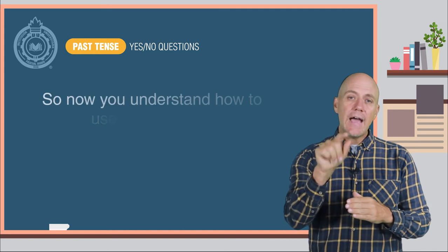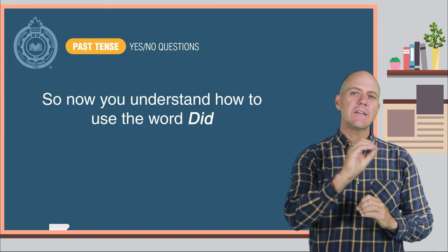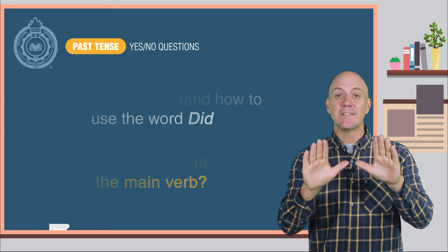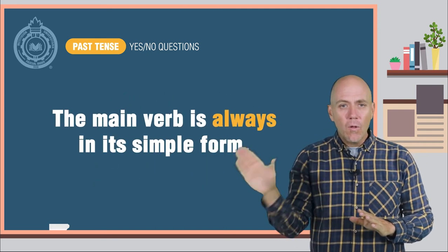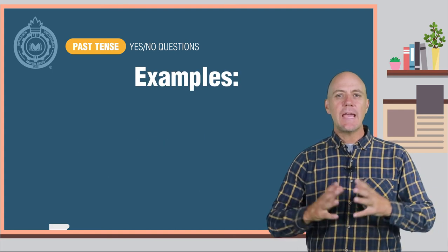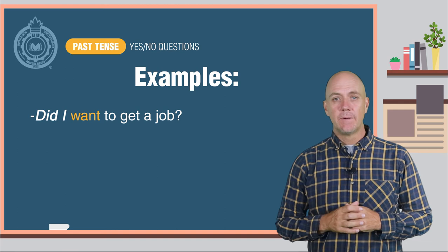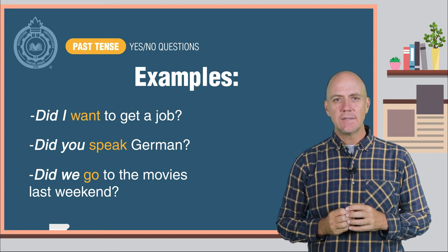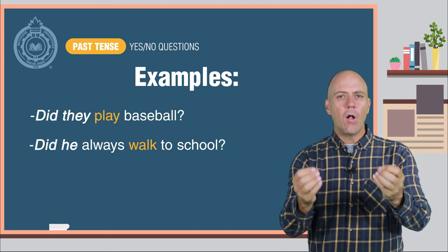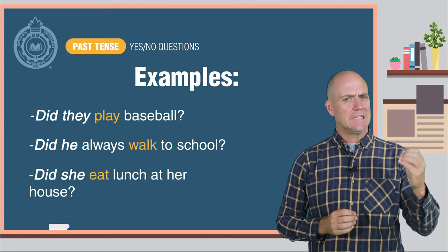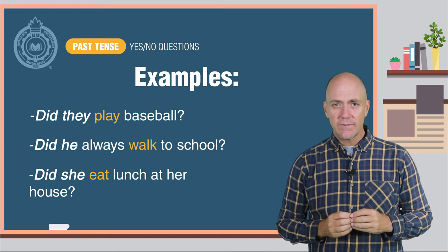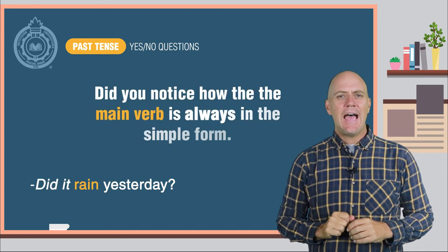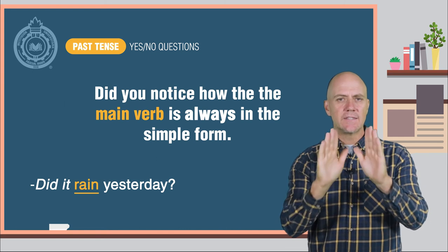Now you understand how to use the word did to ask a yes-no question in English. But what about the main verb? The answer is pretty simple — the main verb is always in its simple form. Here are some examples: Did I want to get a job? Did you speak German? Did we go to the movies last weekend? Did they play baseball? Did he always walk to school? Did she eat lunch at her house? Did it rain yesterday? Did you notice how the main verb is always in the simple form?